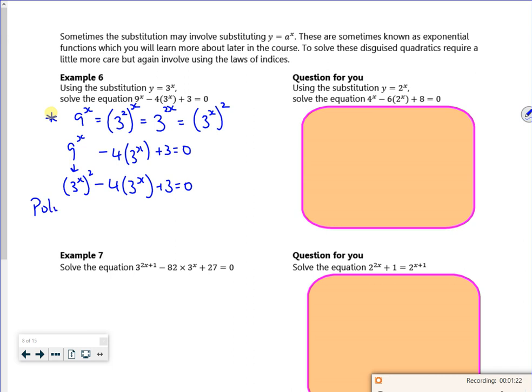So if I put in poly 1 minus 4, 3, that gives me, hold on, that gives me 1 or 3 out. And then my something is my 3^x.